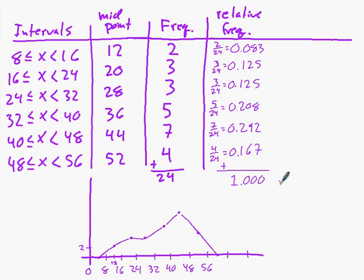So for a relative frequency polygon, instead of putting in the frequencies, if I was to label this, that would be 2, 3, 3, 5, 7, and 4.